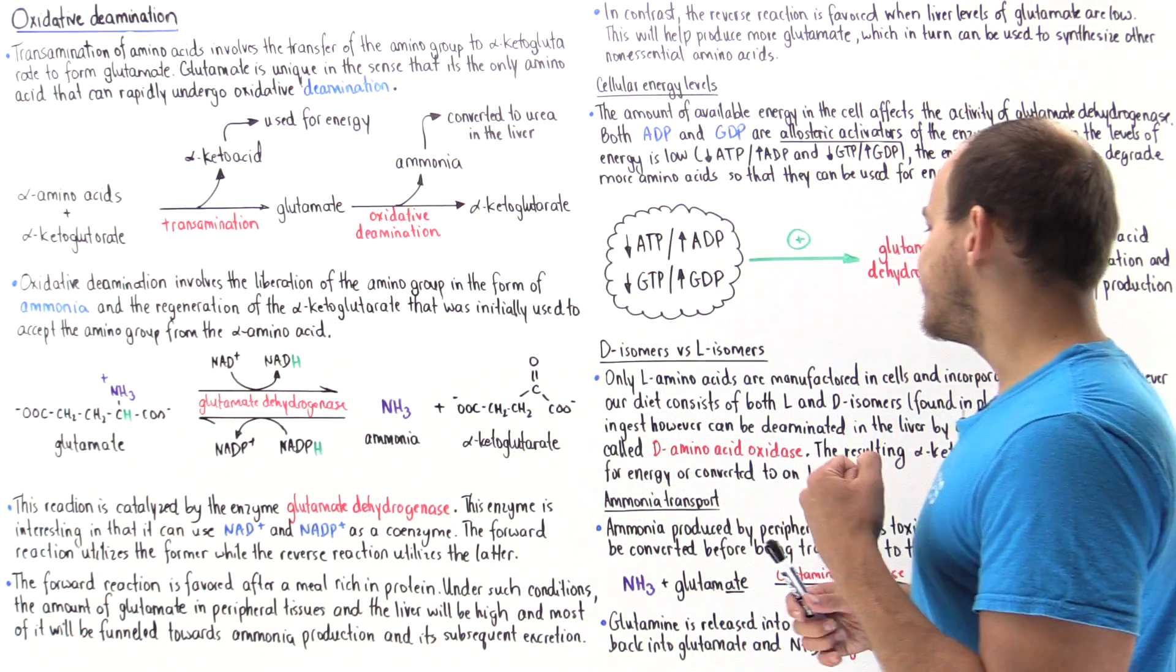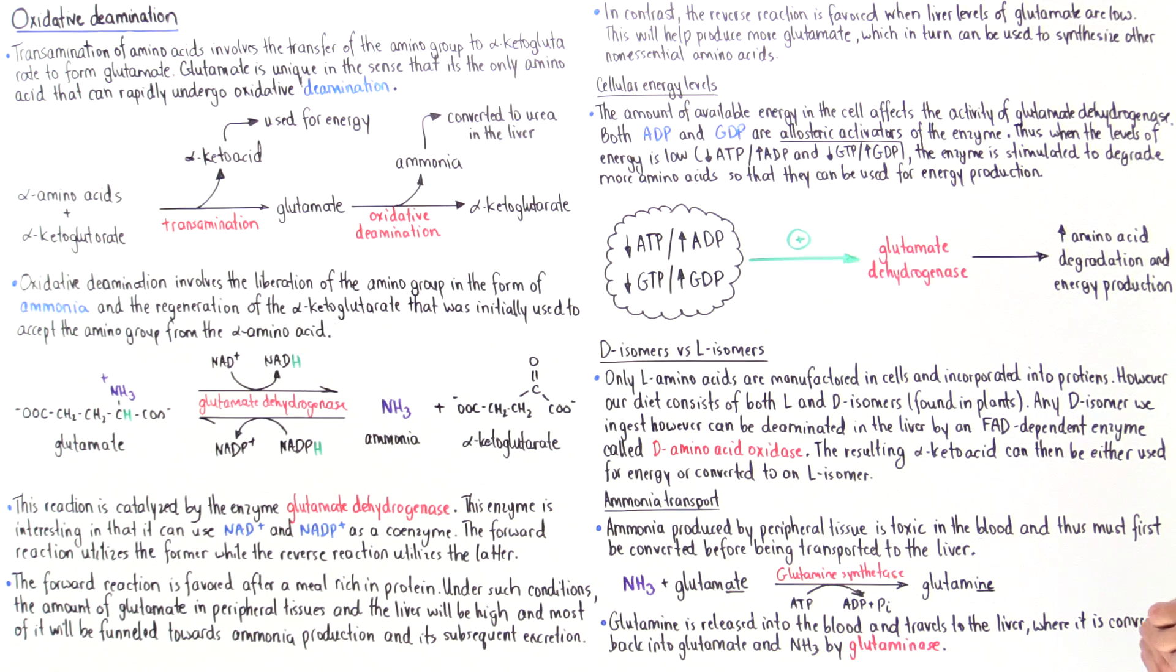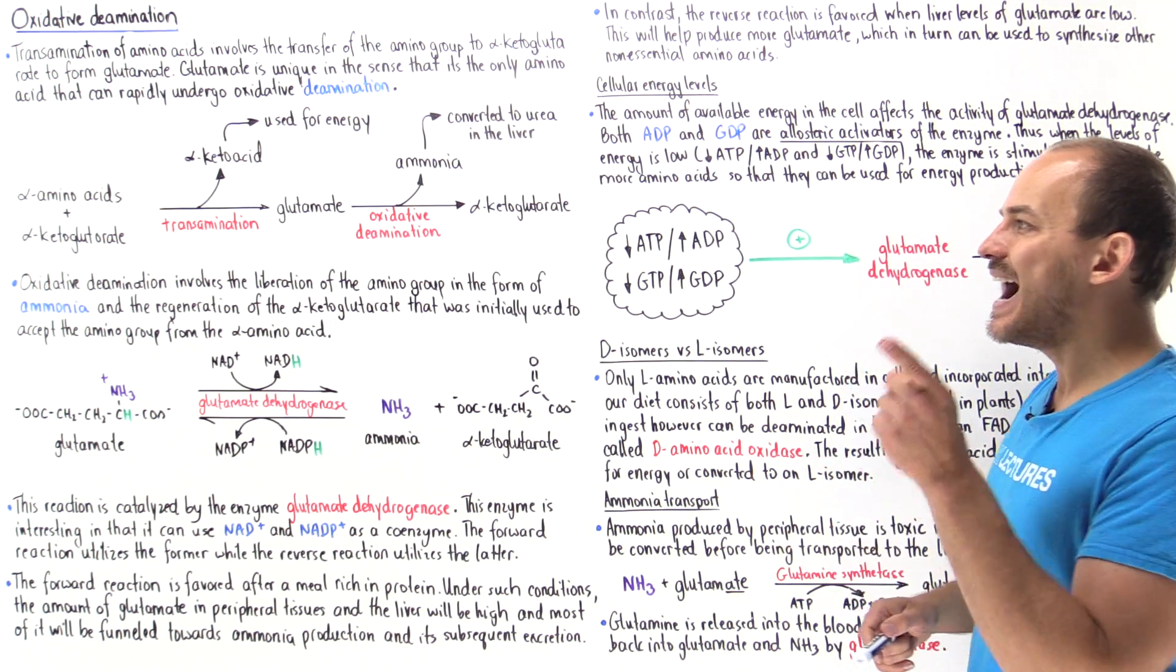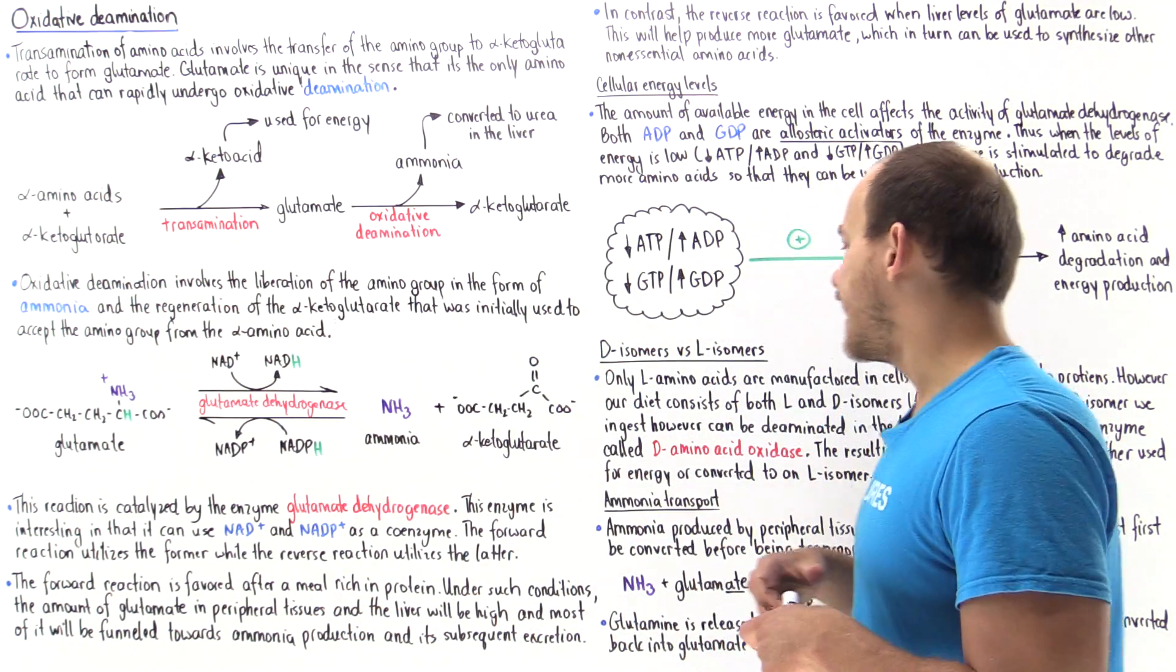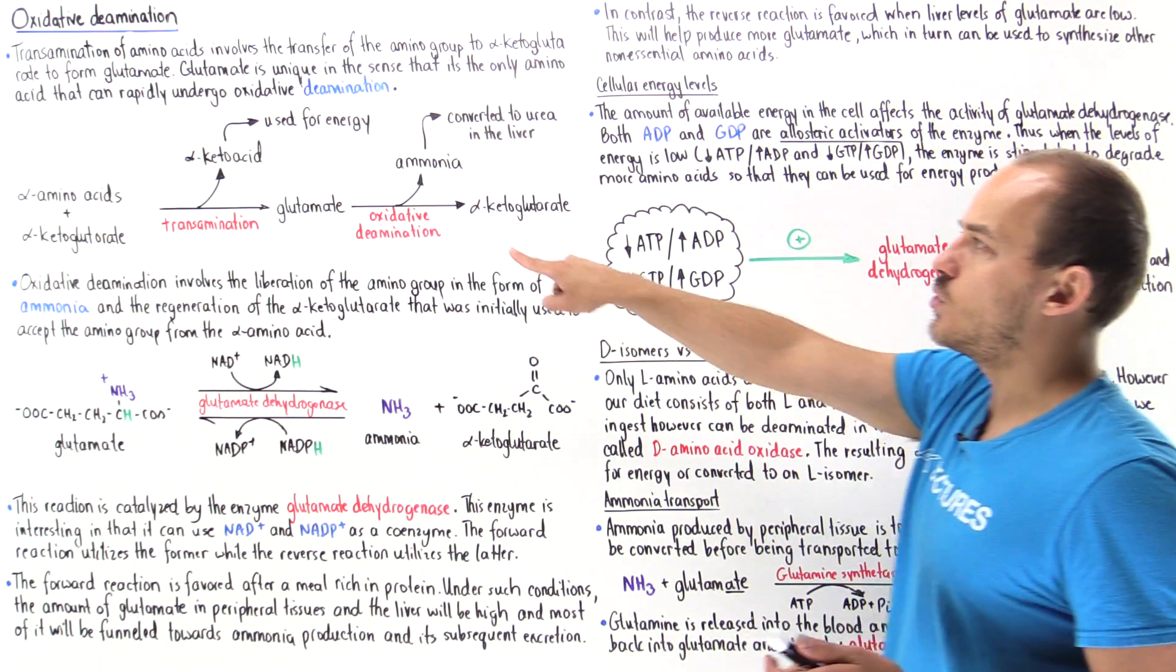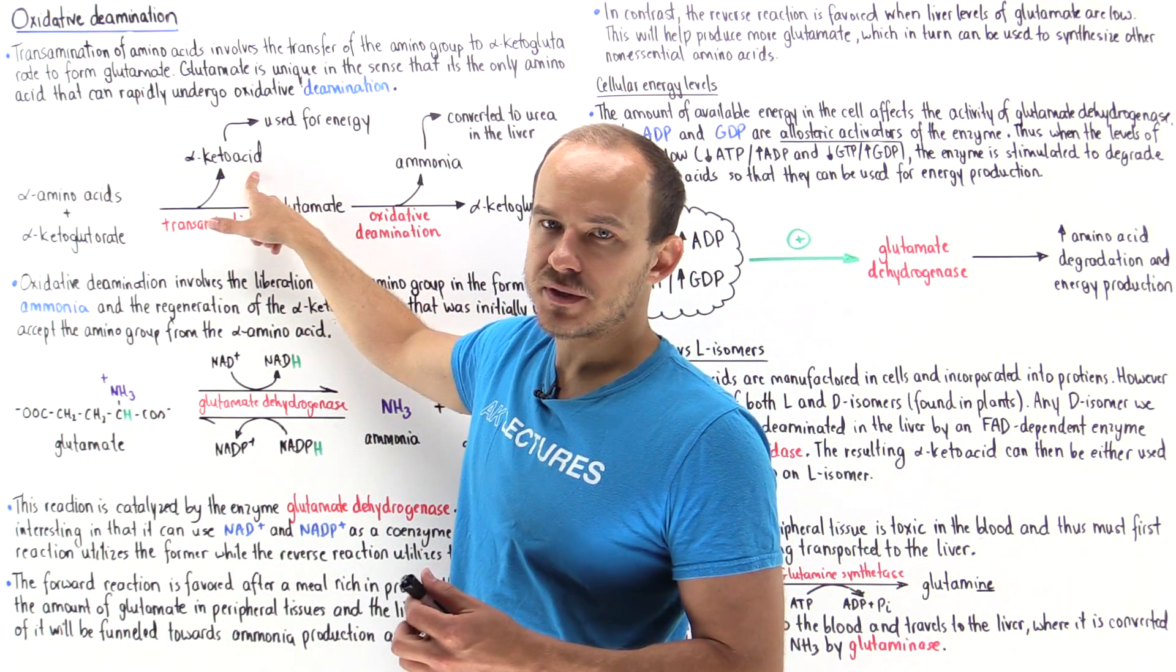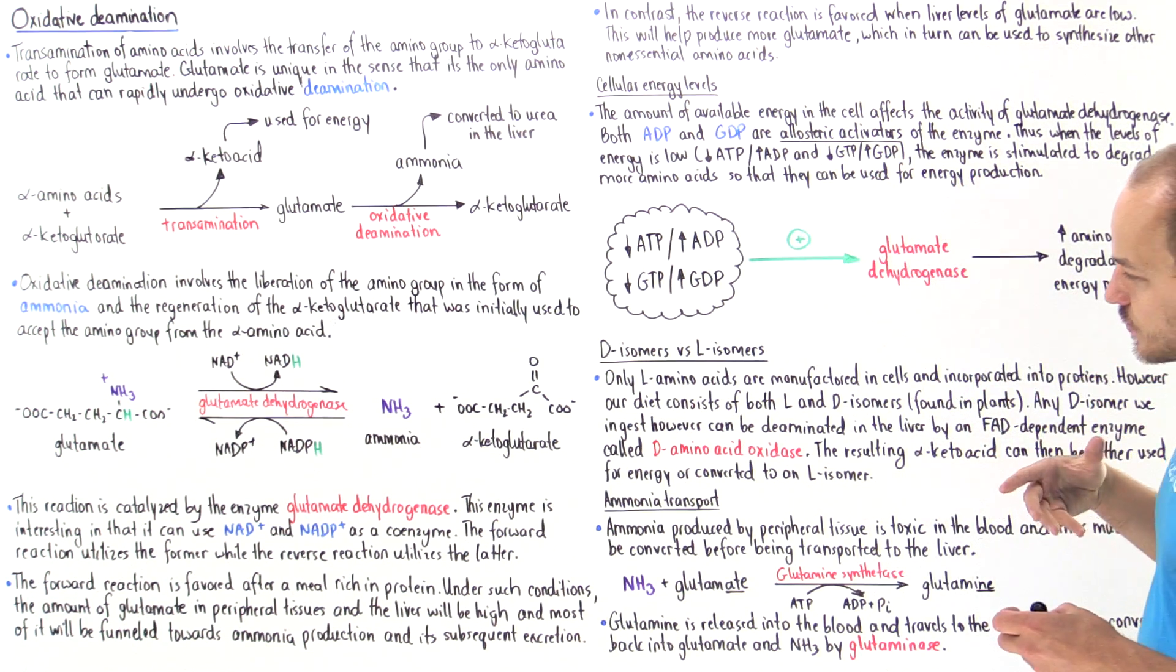In our liver we have an enzyme known as D-amino acid oxidase and this enzyme is an FAD-dependent enzyme that can act on D isomers of alpha amino acids breaking them down into alpha-keto acids. These can either be used to help form an L isomer of the amino acid or they can be utilized for energy purposes. Our body has a way of acting on both L isomers and D isomers.